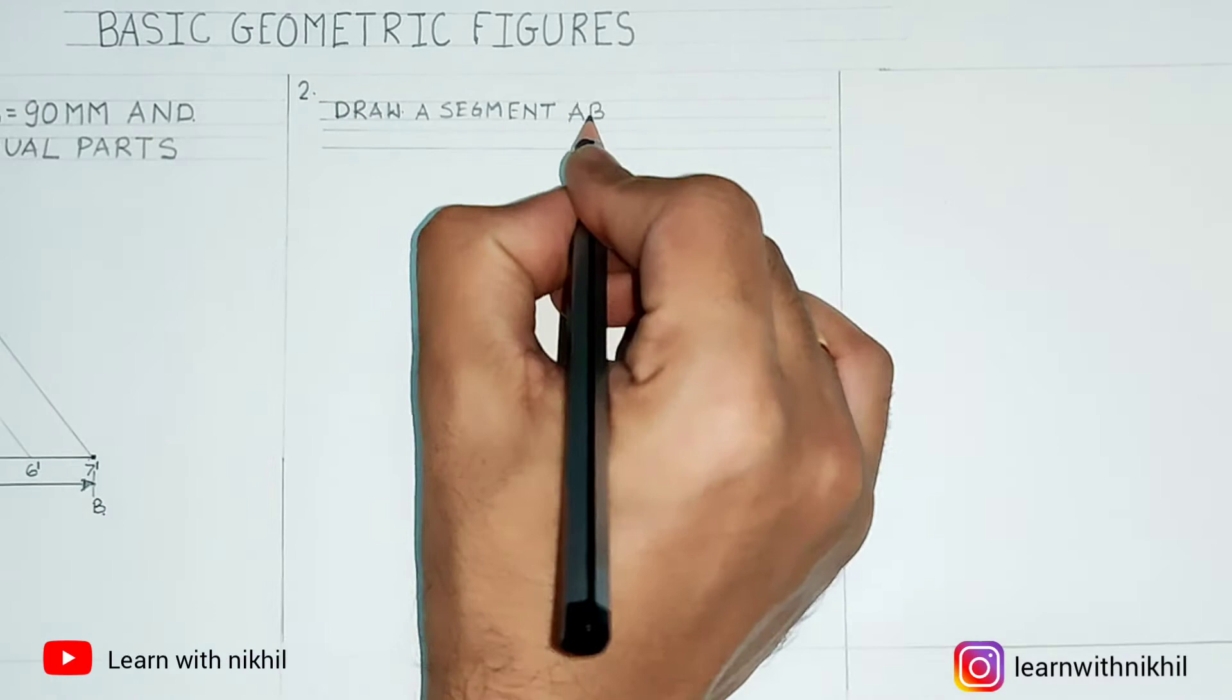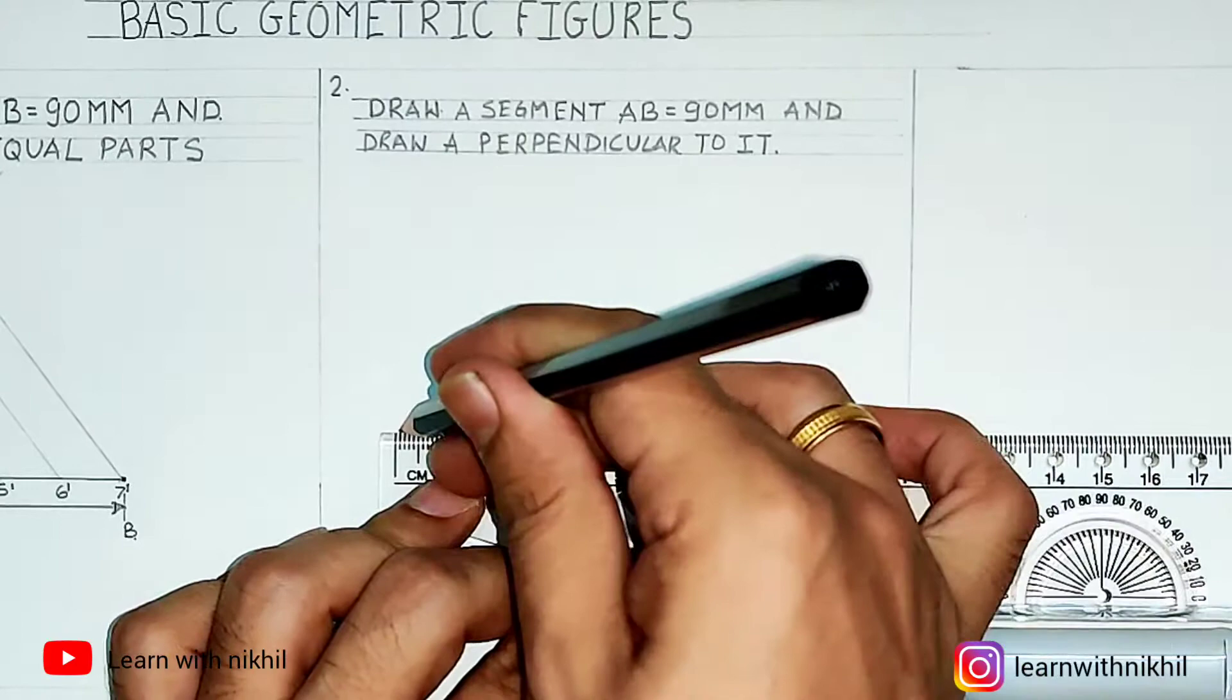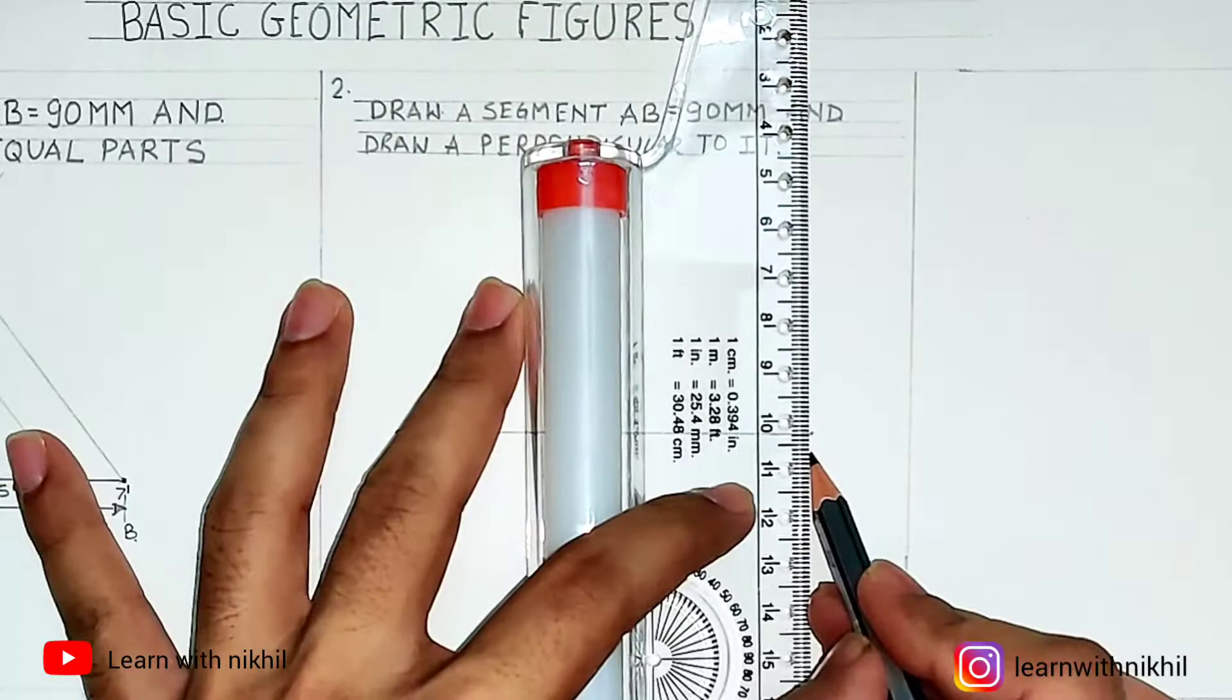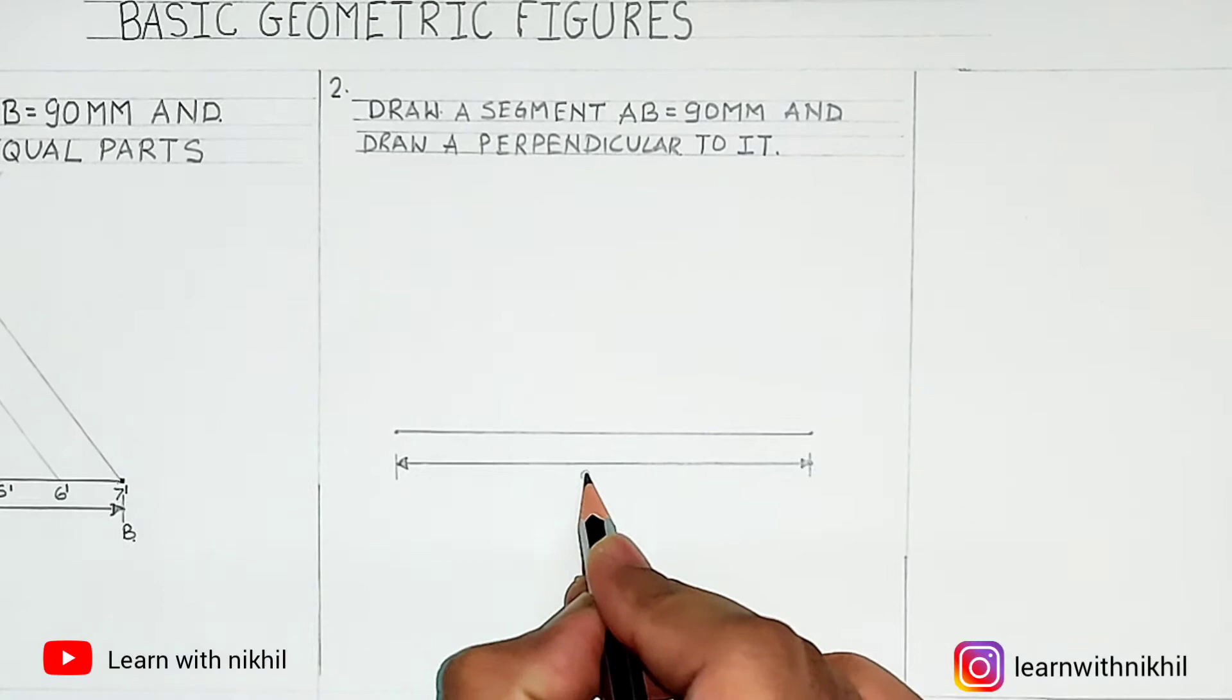Second is: draw a segment AB of 90 millimeters and draw a perpendicular to it. This is the simple one you might have studied in school also. We have drawn a line AB of 90 millimeters.